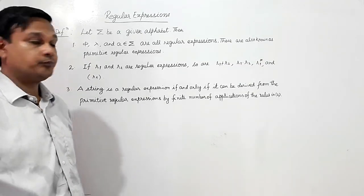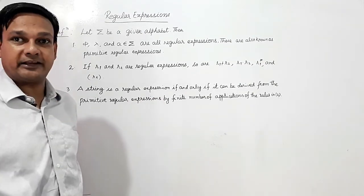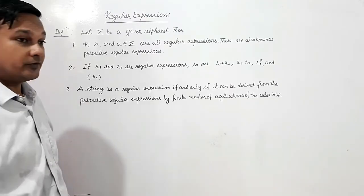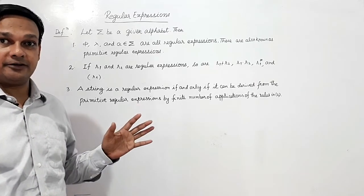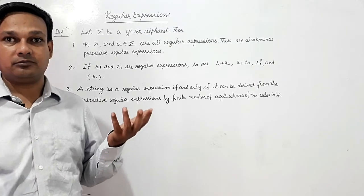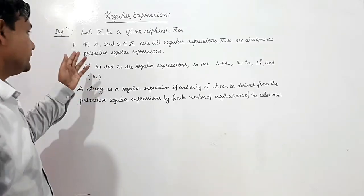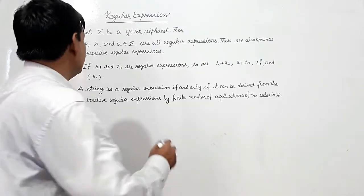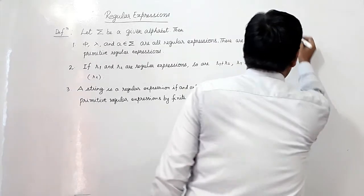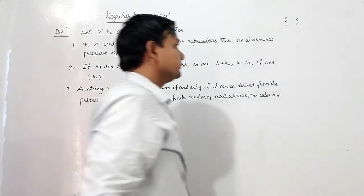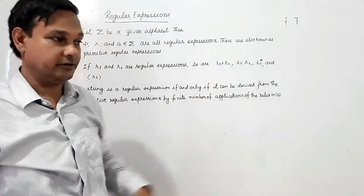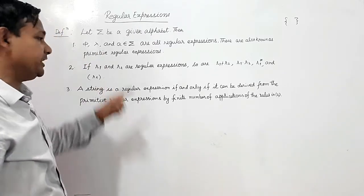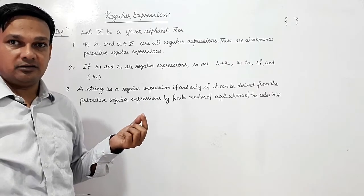Now we shall study regular expressions. First, the definition: if sigma is a given alphabet, then phi (the null set, sometimes written as the empty set symbol), lambda (the null string), and 'a' being any symbol belonging to sigma are all regular expressions. These are also known as primitive regular expressions.